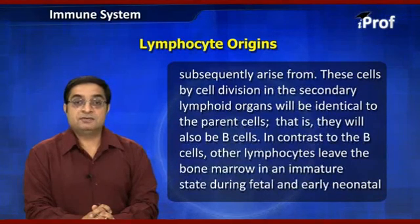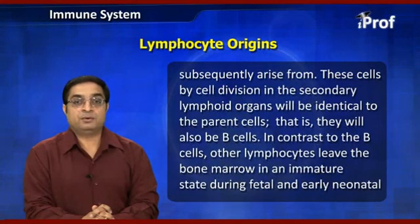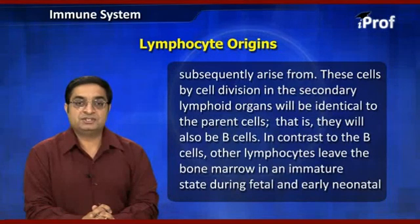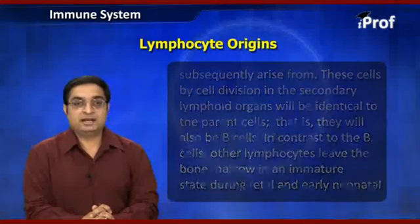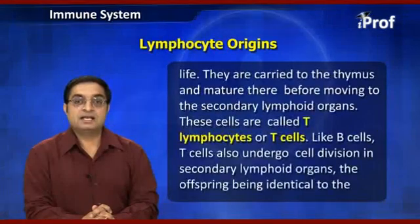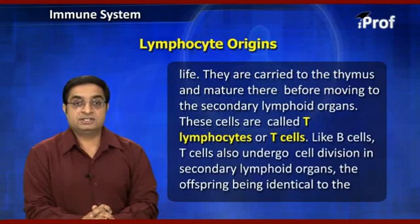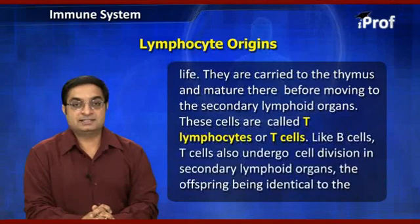That is, they will also be B cells. In contrast to the B cells, other lymphocytes leave the bone marrow in an immature state during fetal and early neonatal life. They are carried to the thymus and mature there before moving to the secondary lymphoid organs.